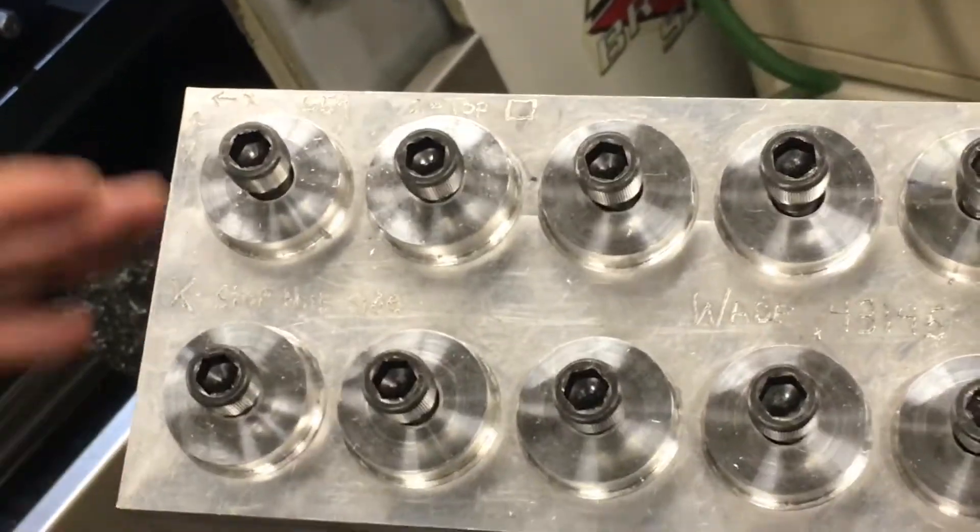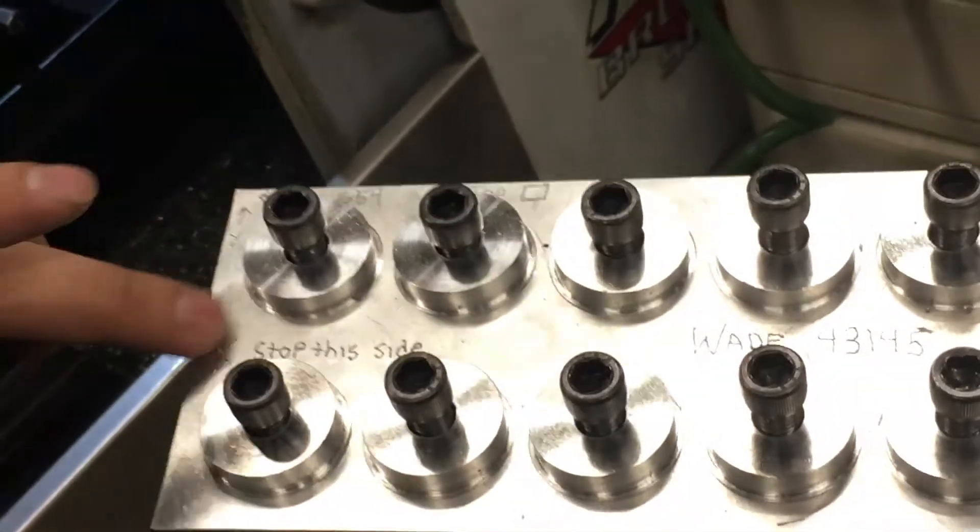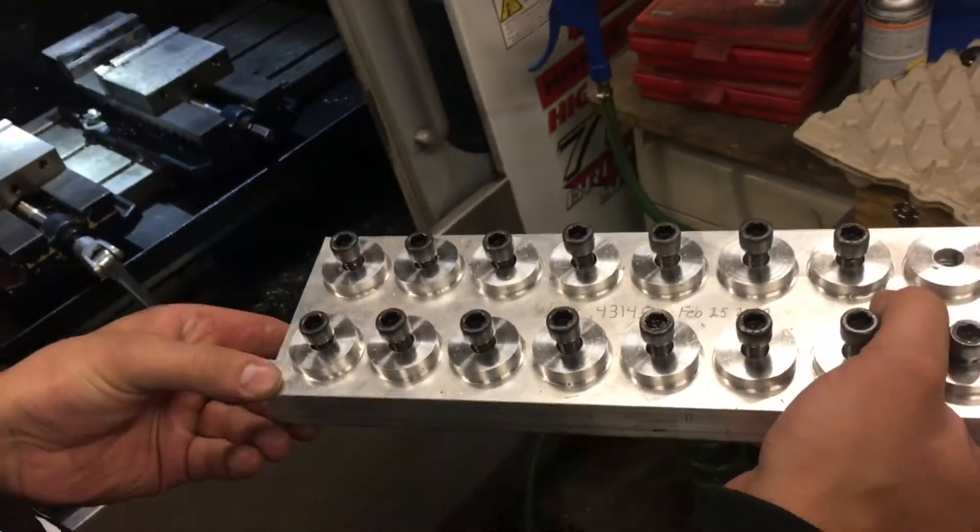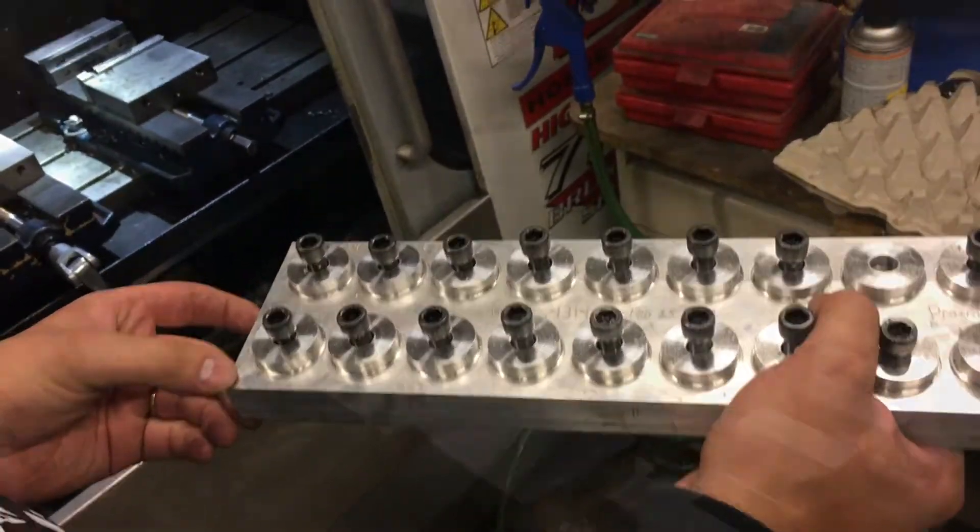So the X is on the stop on this side. So we're just going to load this in the parallels. Make sure everything's clean. Touch the top. Subtract our three inches for our tool offset. And I'll show you how to do it.